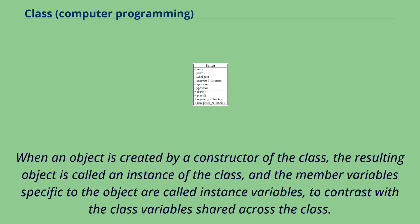When an object is created by a constructor of the class, the resulting object is called an instance of the class, and the member variables specific to the object are called instance variables, to contrast with the class variables shared across the class.